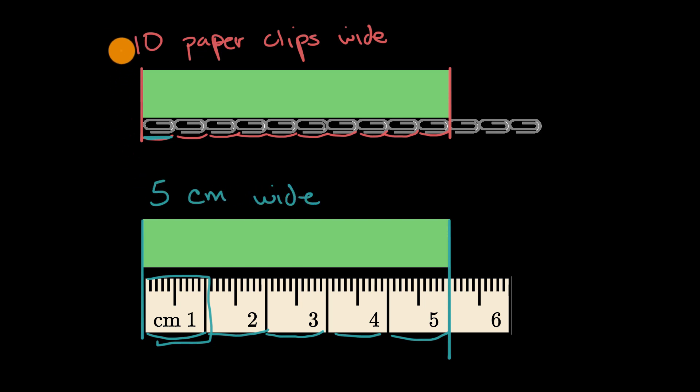And so because we needed more paper clips, that means that this is a smaller unit of measure because we needed more of them. So this is a smaller unit of measure. The paper clip is the smaller unit of measure. And then the centimeter is the larger unit of measure.